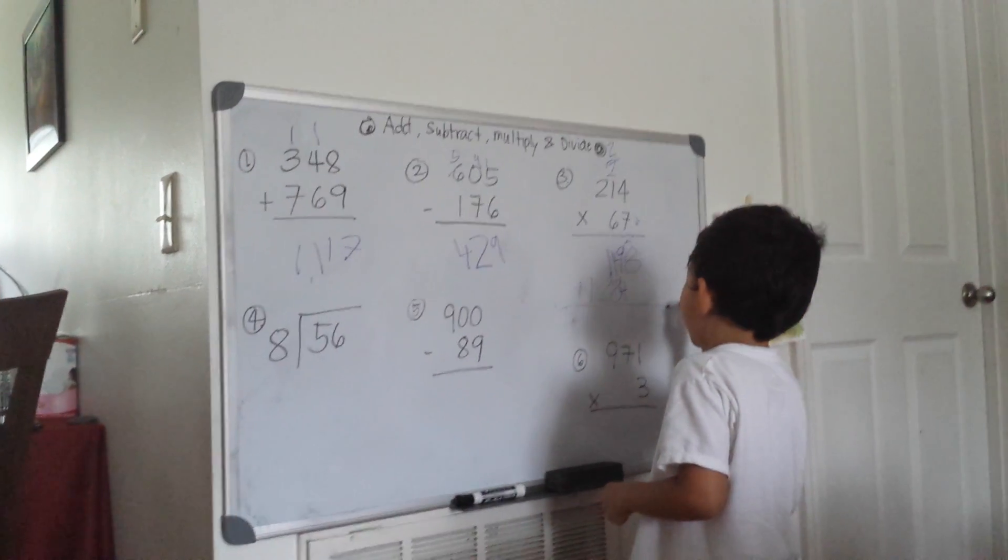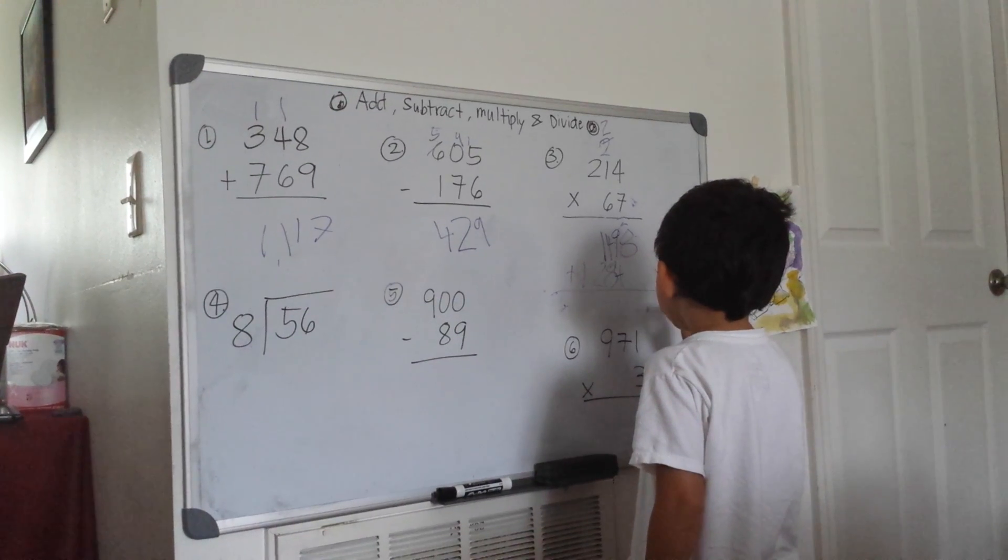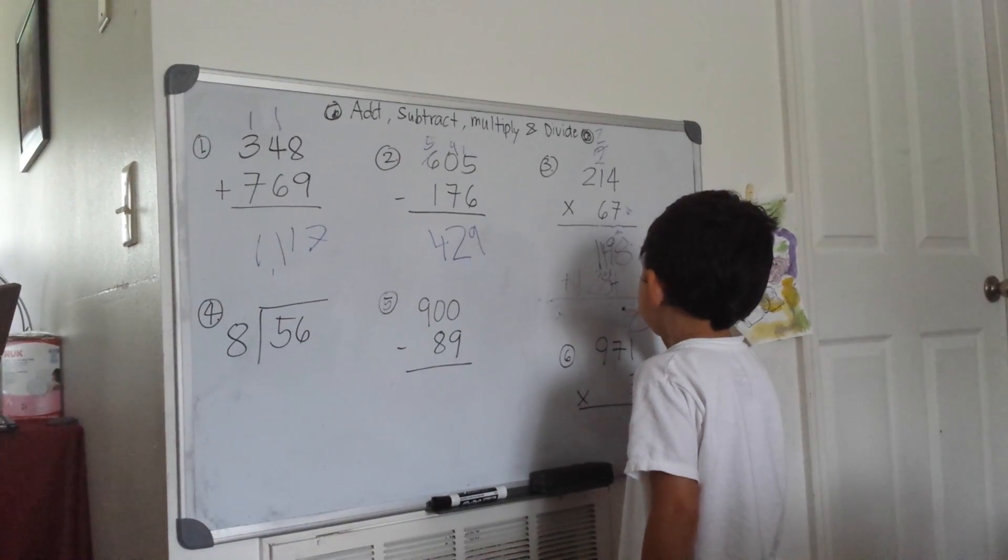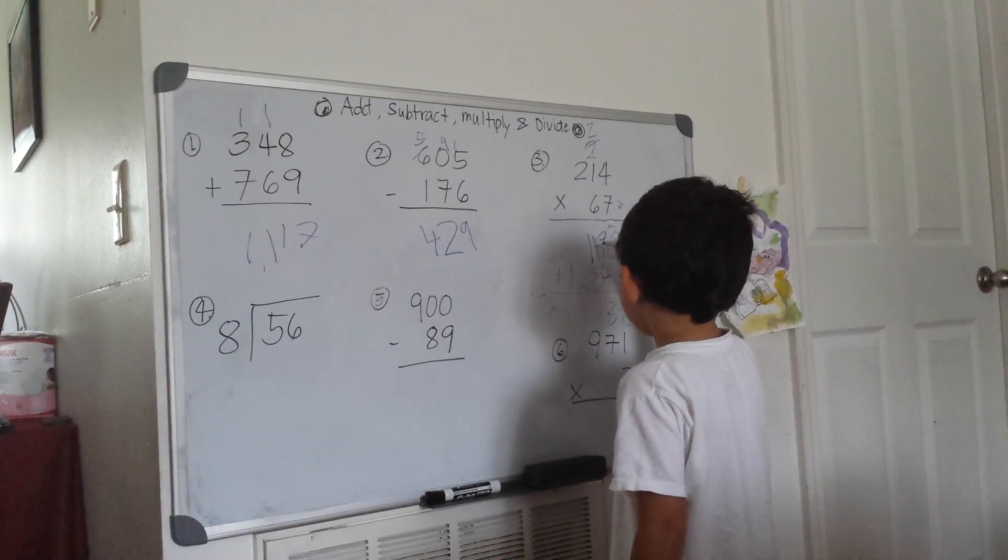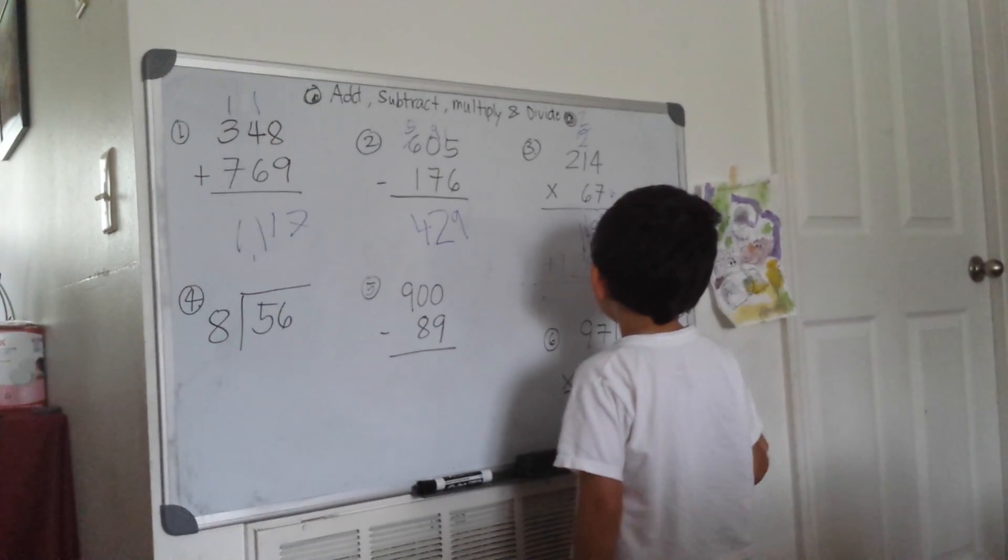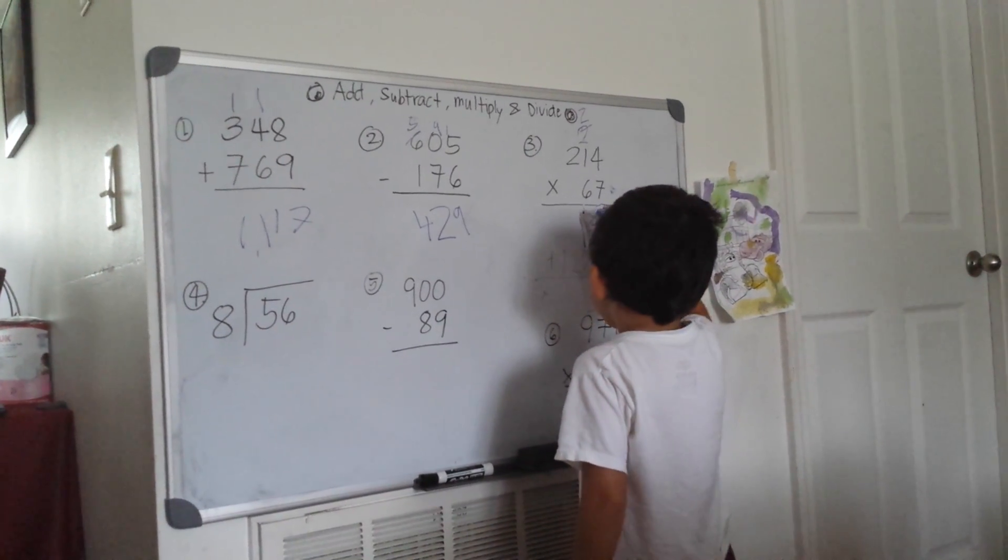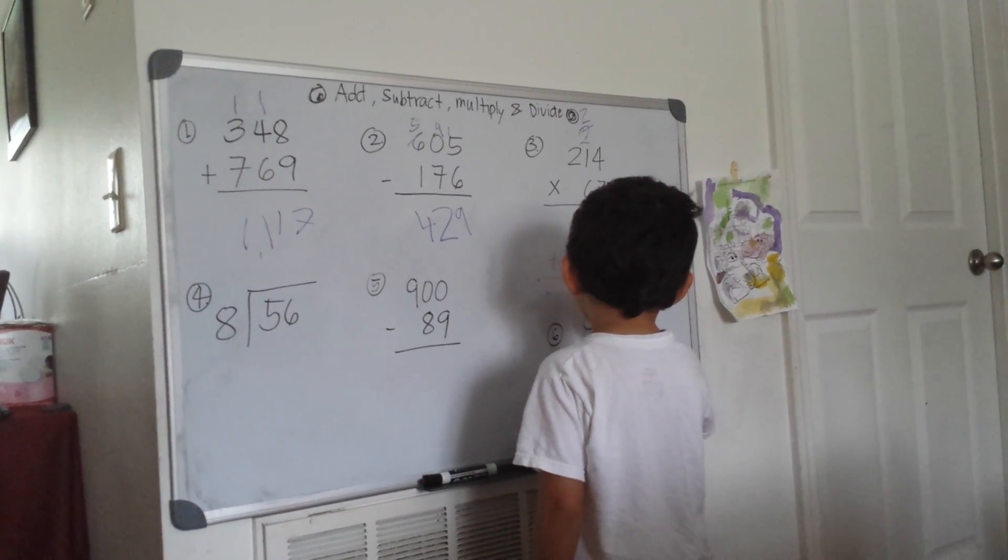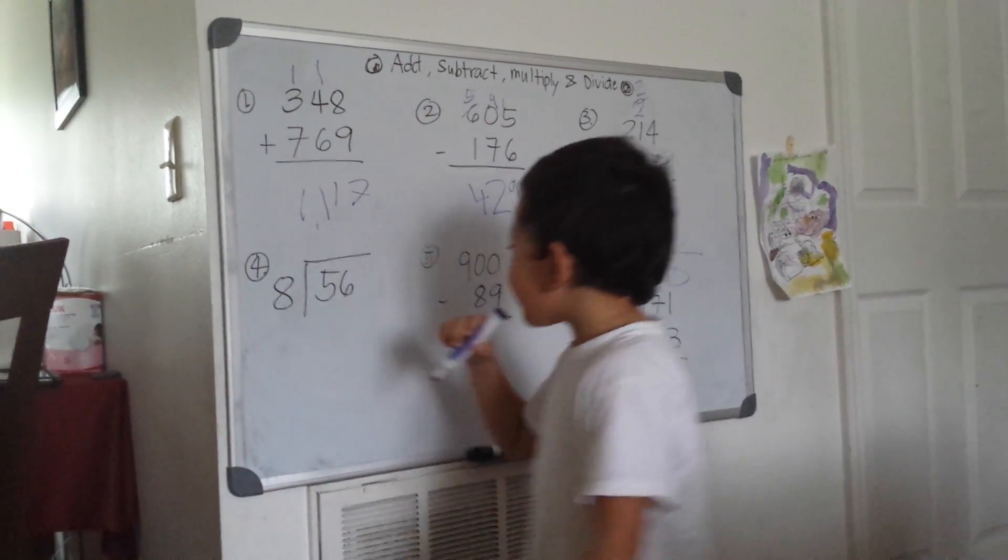Adding them together: 8 plus 0 is 8. 9 plus 4 is 13, carry the 1. 1 plus 4 is 5, plus 8 is 13, carry the 1. 1 plus 1 is 2, plus 2 is 4, plus 8 is 14. The answer is 14,338.